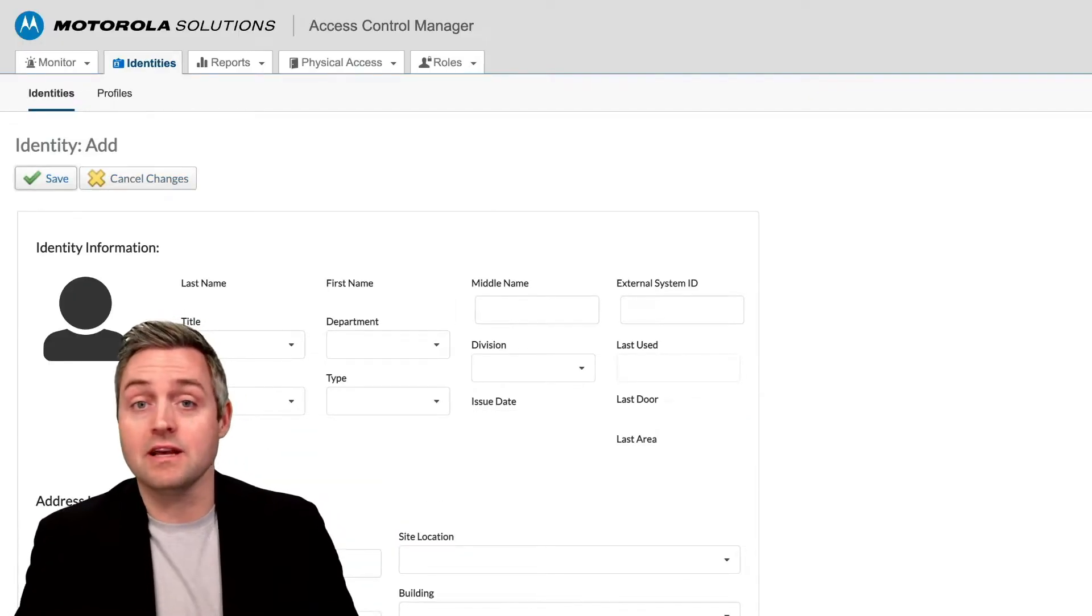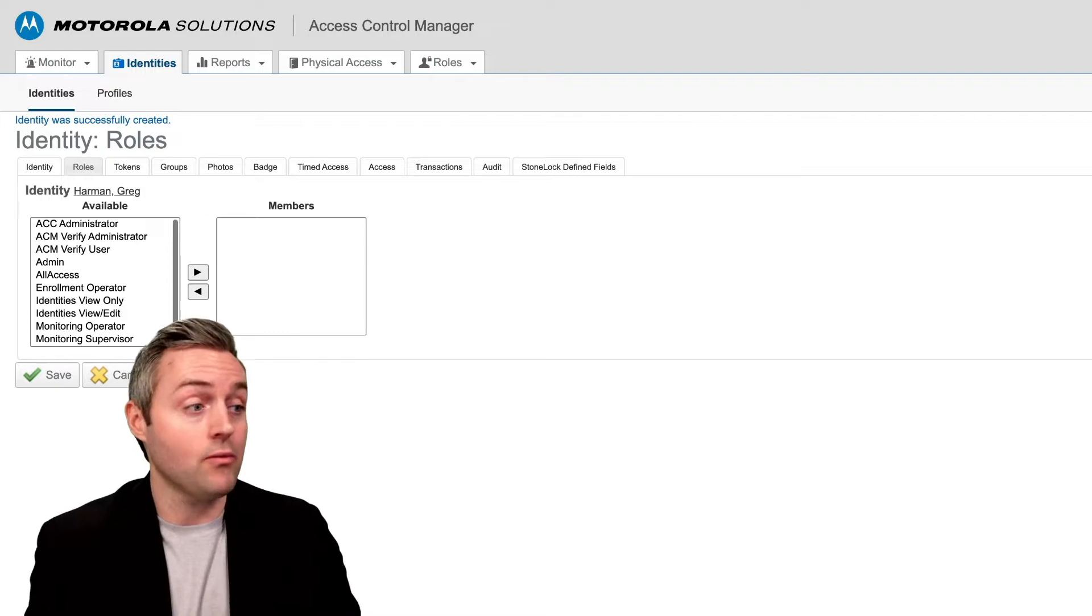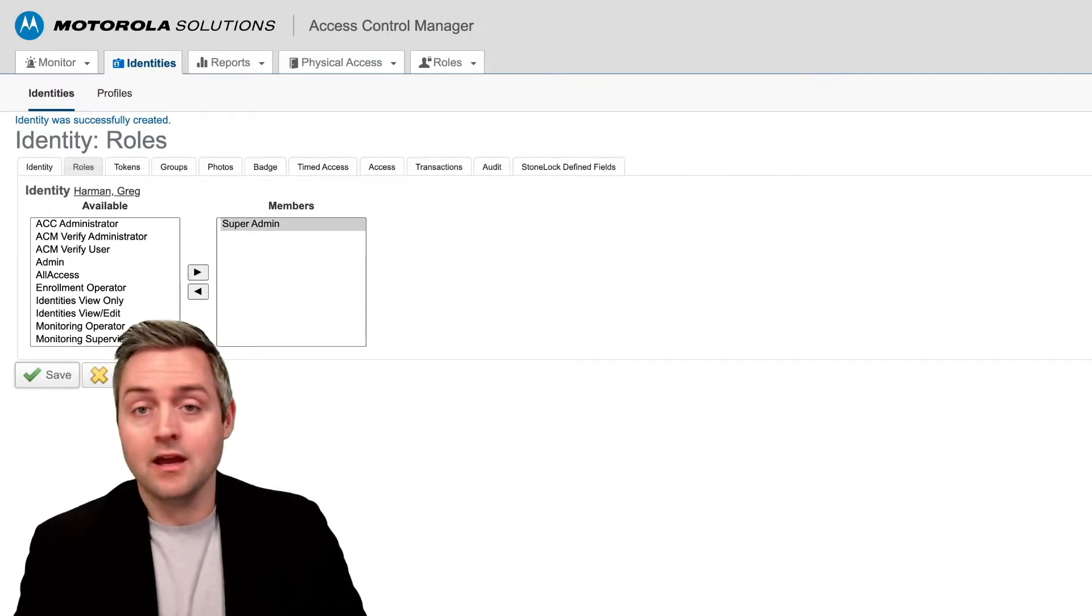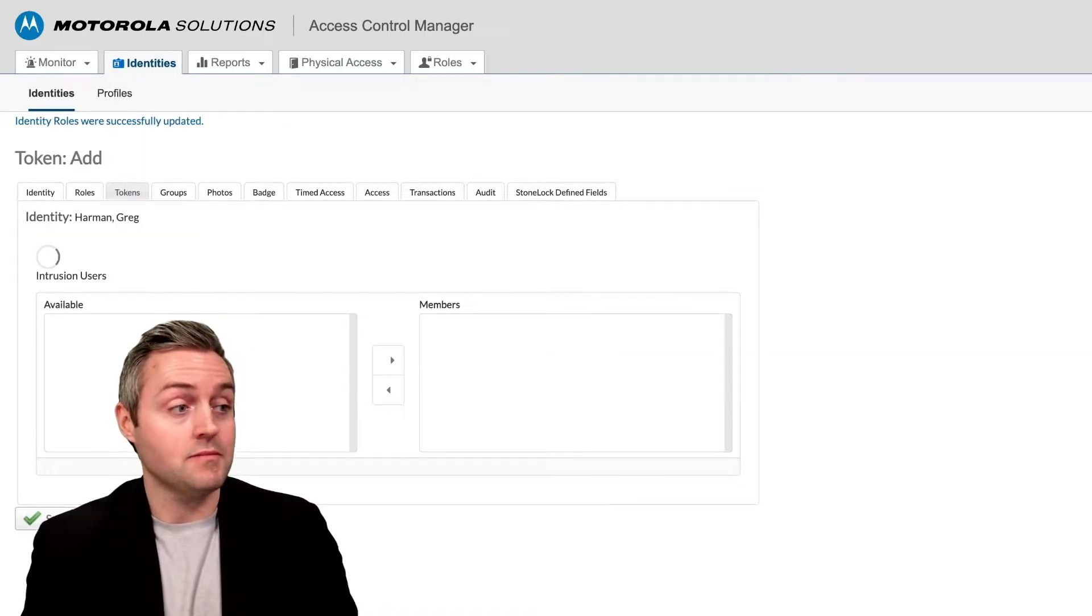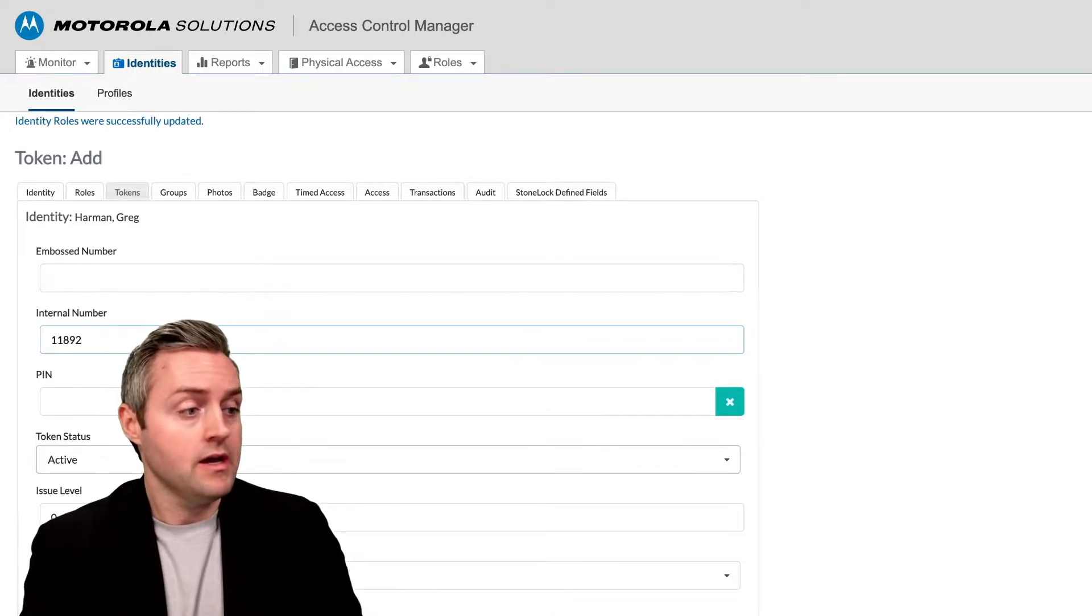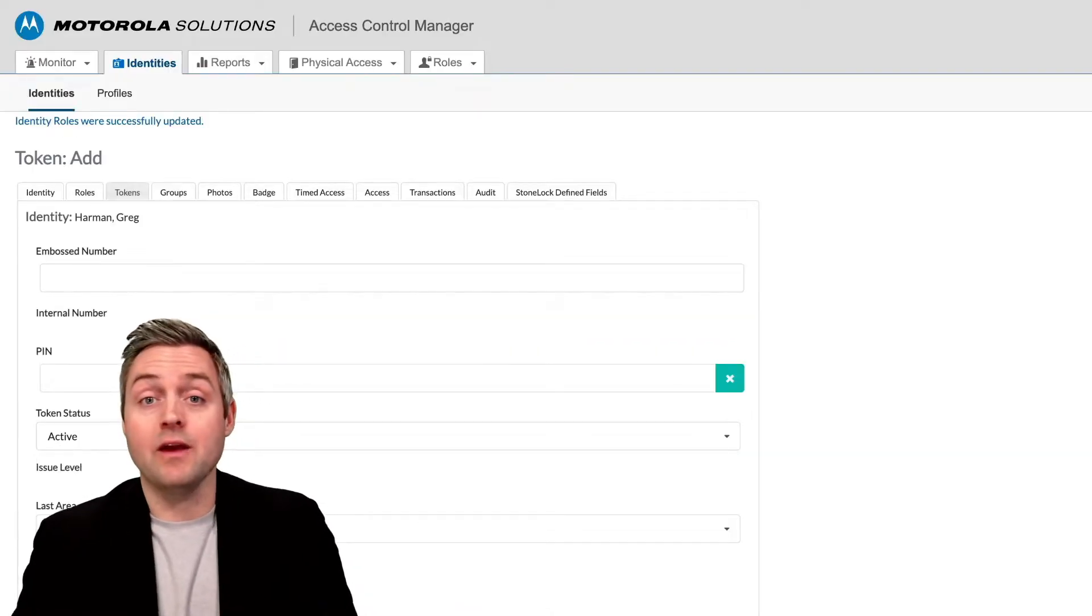And as soon as I have saved that, it's going to prompt me to assign my role. So I'm going to do that, and hit save again. And then finally, it's going to ask me to enter my card number. And as soon as that comes up, I'm just going to enter my card number, scroll down, hit save, and we're done.